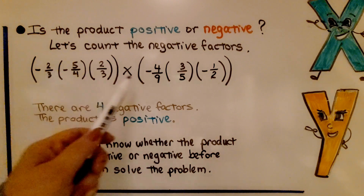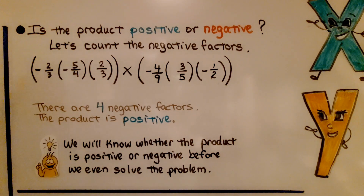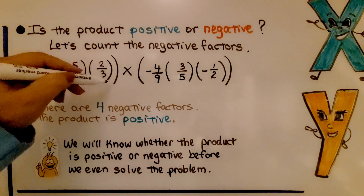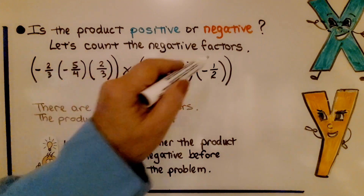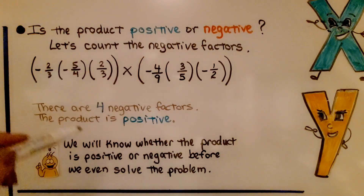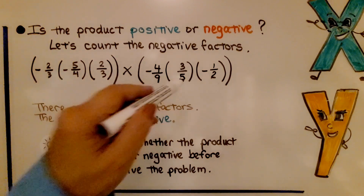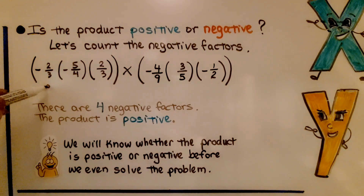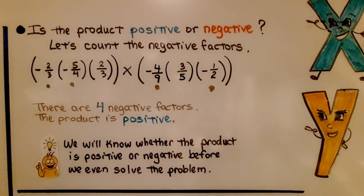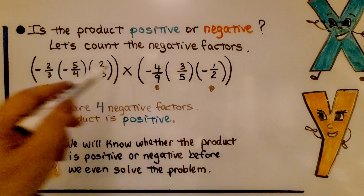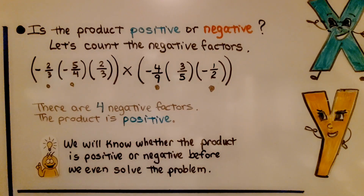Now look at all of these rational numbers that need to be multiplied. There are parentheses grouping certain pairs together so those get multiplied first, then the partial products are multiplied together. We can count one, two, three, four negative factors in all. That's an even number, so this entire product is going to be positive — we know the sign before we even solve the problem.